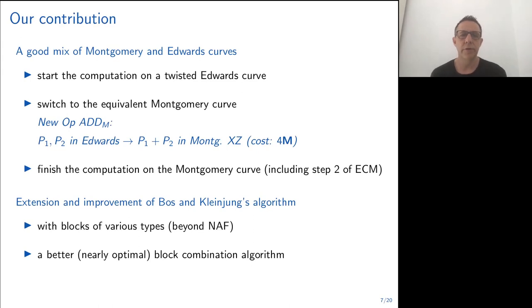What is the contribution of this work? We try to use a good mix of Montgomery and Edwards curves. The algorithm will follow: we start the computation on the Twisted Edwards curves. At some point, we switch to the equivalent Montgomery curve. For that, we introduced a new operation that is called ADD-M. Given two points in Edwards coordinates, we can compute the sum P1 plus P2 on the corresponding Montgomery curve in X, Z coordinates only, and this operation costs only four multiplications. And then we can finish the computation on the Montgomery curve, including the step 2 of ECM.